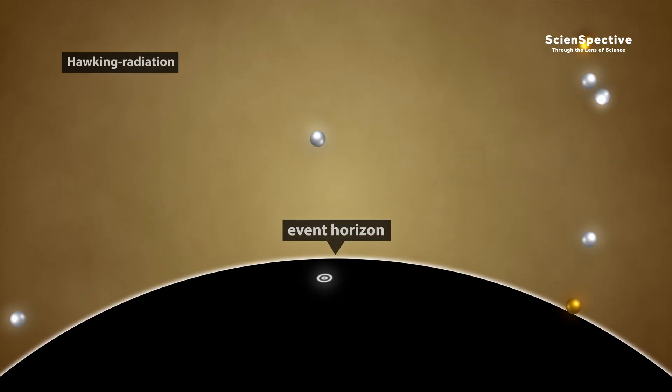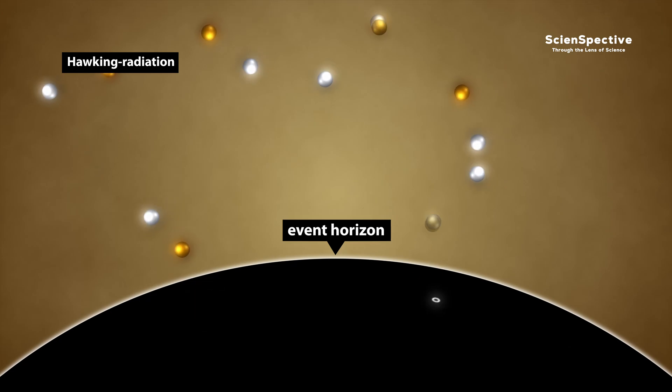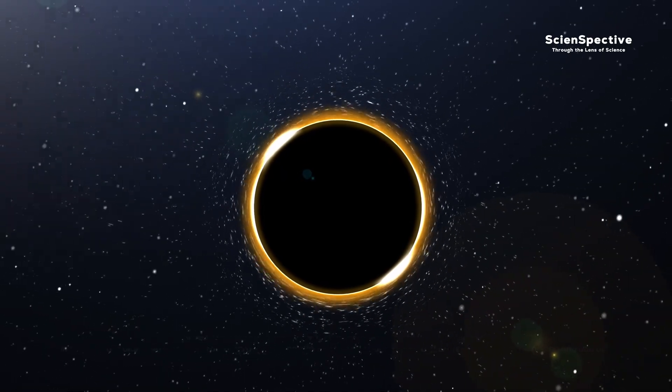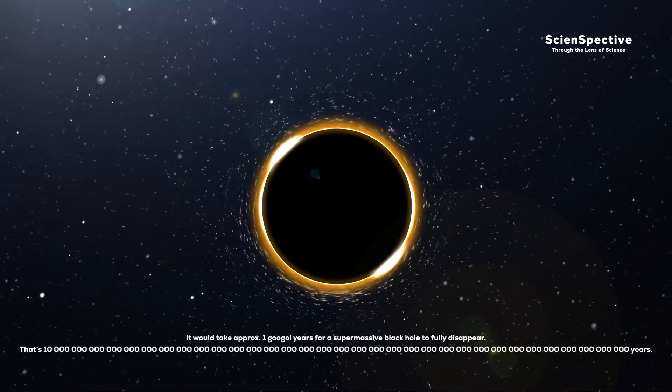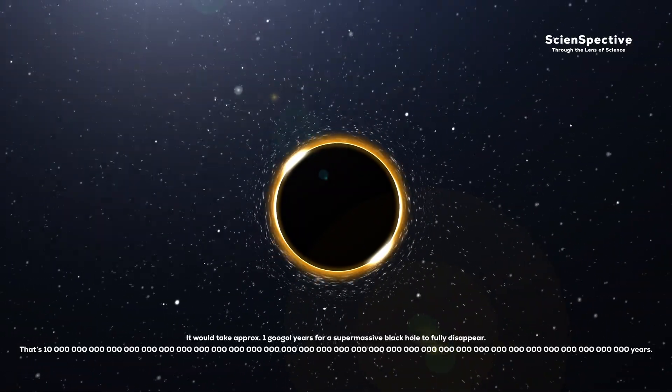But that's not really the problem. The real issue is that black holes are not eternal. We know that the vacuum isn't truly empty. Virtual particle pairs constantly pop in and out of existence, annihilating each other almost instantly. If this happens near the event horizon, one particle might fall in while the other escapes. The one falling in has negative energy, meaning the black hole effectively consumes negative calories. Over time, it loses mass particle by particle until after an unimaginably long time, it either evaporates completely or ends in a massive explosion.